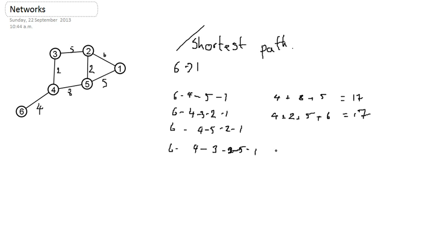That's okay. Let's see if there's a shorter one. So 6 to 4, which is 4, 4 to 5, which was 8, 5 to 2, which is 2. 2 to 6—sorry, 2 to 1, which is 6. So that gives me 20. So that is not actually shorter.